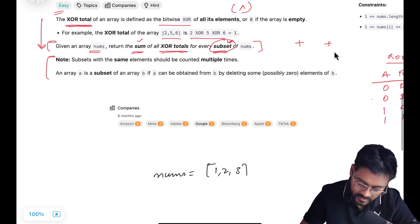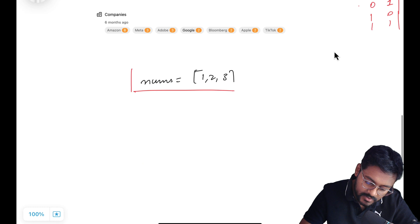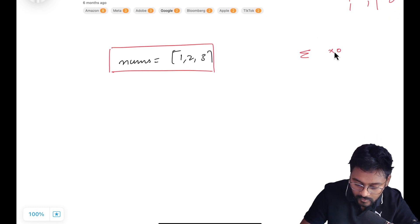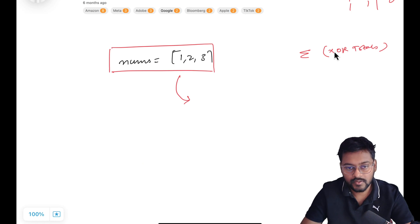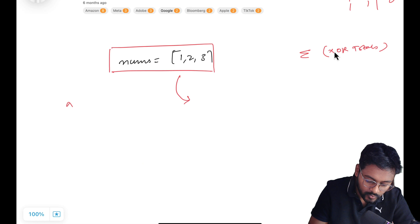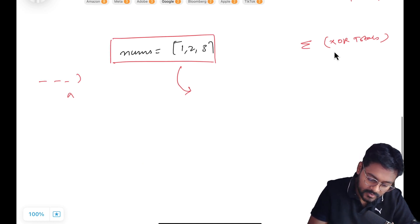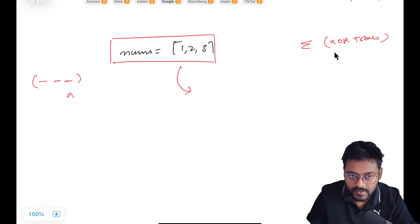And of every subset of nums, now we have this sub problem of figuring out all the subsets of nums. So what is given to us? An array and they are expecting us to take sum of all the XOR totals. And what is XOR total? Whatever is the subset of this array, XOR total is the XOR of all the values in that subset.